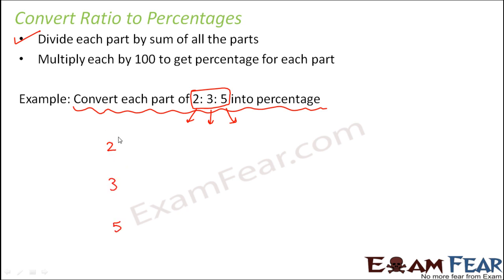So we have to convert each of these parts into a percentage. So it is something like this. Let us say that the ratio of the ages of three people are 2 is to 3 is to 5. That means if the age of the first person is 2x, the age of the second person would be 3x and the age of the third person would be 5x. That is the meaning of 2 is to 3 is to 5.